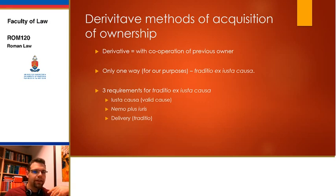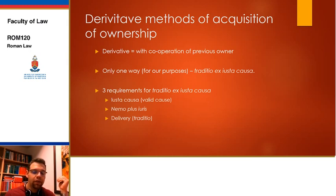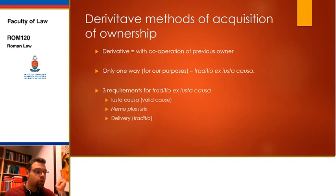Traditio ex justa causa is the way in which one person can make another person the owner of a thing. Traditio has three main requirements: justa causa, compliance with the Nemo plus juris rule, and finally actual traditio — the delivery itself. Don't worry, we'll be going through each of these in more detail.